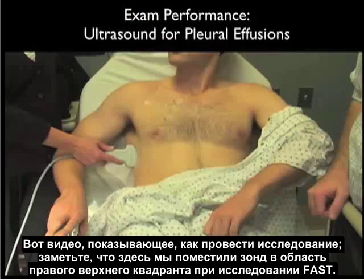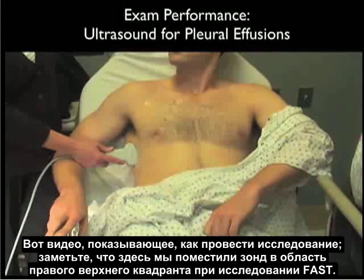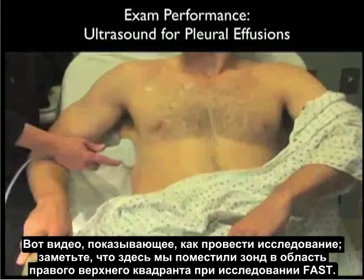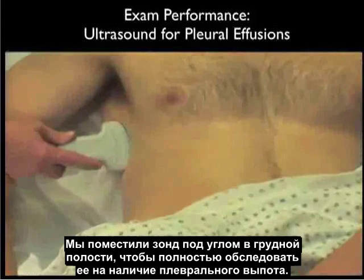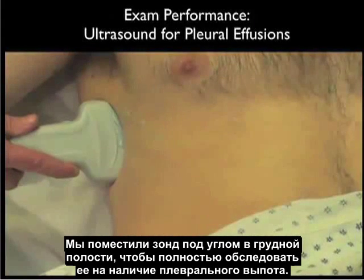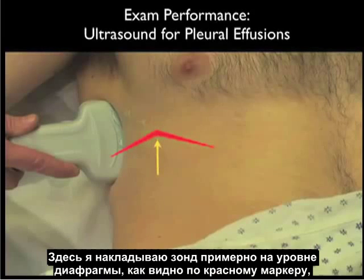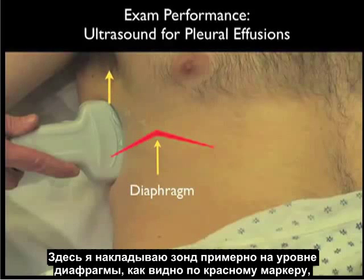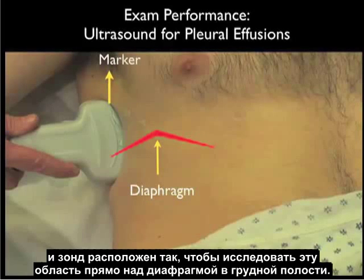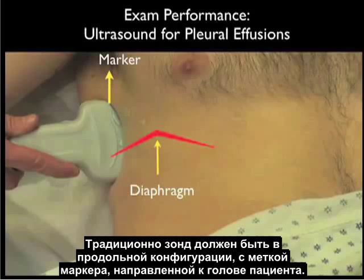Here's a video going over how to perform the examination. Notice here we have a probe placed into the right upper quadrant trauma fast area. Notice that we're angling the probe upwards into the thoracic cavity to fully investigate for a pleural effusion. Here I'm just superimposing about the level of the diaphragm as shown in the red marker, and the probe is positioned coming into that area just above the diaphragm into the thoracic cavity. Traditionally, the probe should be in a long axis configuration with the marker dot towards the patient's head.